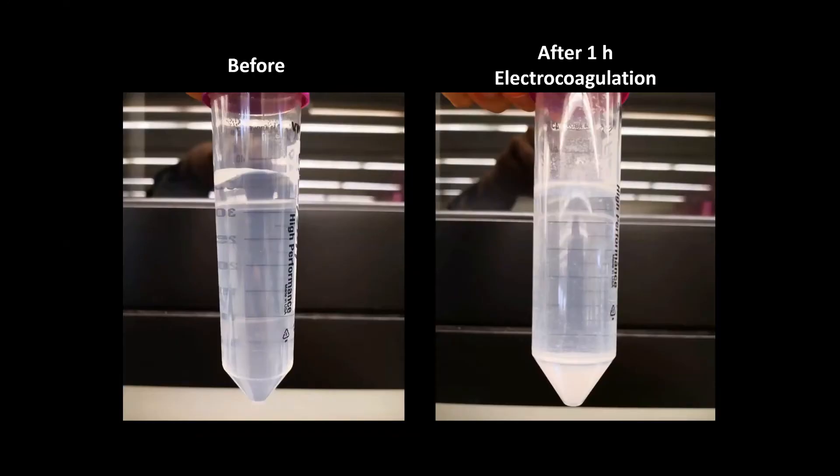You can see the generated metal hydroxide flocs after an hour on the right. You can clearly see the white precipitate at the bottom of the tube. Contaminants can be coagulated with this floc or adsorbed onto the surface of the floc, so we can remove contaminants from water.